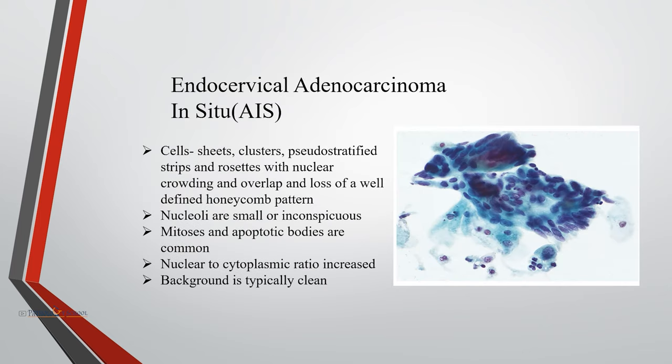Endocervical adenocarcinoma in situ: cells are arranged in sheets, clusters, pseudostratified strips, and rosettes with nuclear crowding and overlap. There is loss of the well-defined honeycomb pattern. Nuclei are usually small or inconspicuous, and mitosis and apoptotic bodies are commonly seen. The nuclear-to-cytoplasmic ratio is increased, and the background is typically clean.